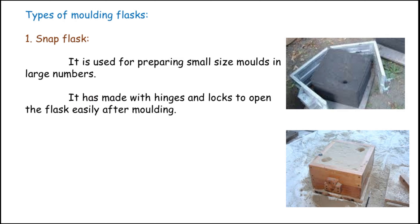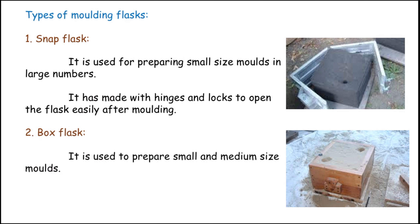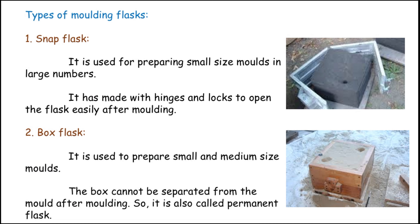The second type is the box flask, used to prepare small and medium size molds. The box cannot be separated from the mold after molding, so it is called a permanent flask. Friends, if you like this video give a thumbs up, share with your friends. If you have any doubts, leave a comment. Don't forget to subscribe — thank you.